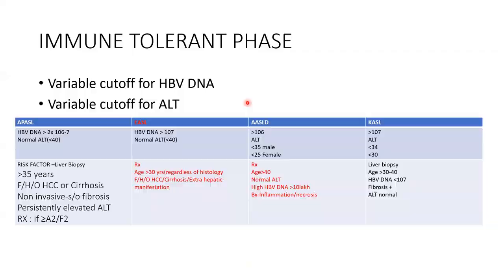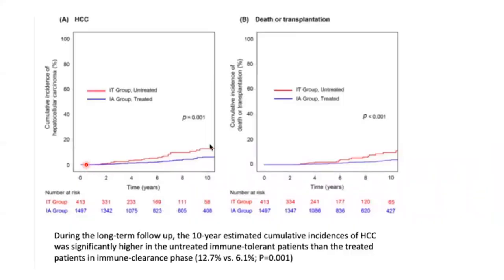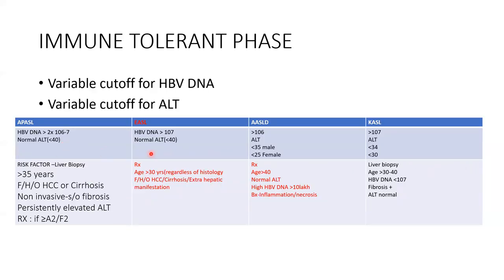The immunotolerant phase is another diagnostic dilemma: DNA is high, ALT is normal, no inflammation — what do we do? The recommendation is to still treat if risk factors are high, because studies have shown high incidence of hepatocellular carcinoma even in the immunotolerant phase with very high DNA levels. To prevent HCC formation, we treat these patients. Various international guidelines — APASL, European, American, Korean — agree that if risk factors are present, a biopsy can be done; if biopsy shows moderate to severe inflammation (A2 and F2), we treat.